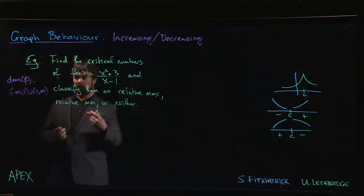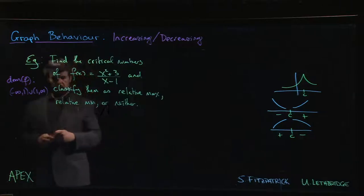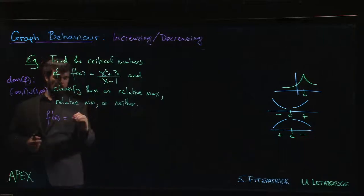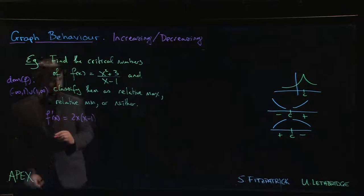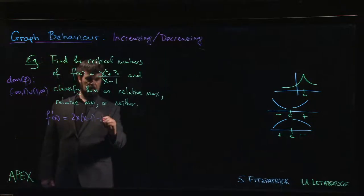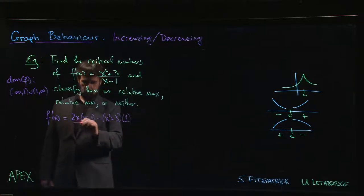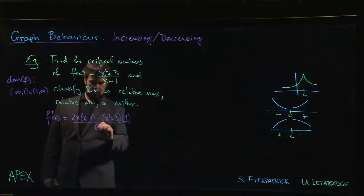So how do we find those critical numbers? Well we need the derivative. We've got a rational function so let's use the quotient rule. The derivative of the top is 2x times the bottom minus the top times the derivative of the bottom, divide by denominator squared.